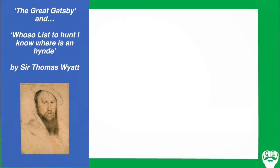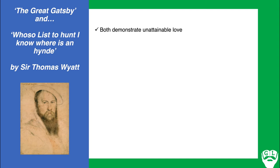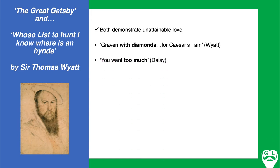Firstly, I'll compare The Great Gatsby to 'Whoso List to Hunt, I Know Where Is an Hind' by Sir Thomas Wyatt. Both texts demonstrate a sense of unattainable love — in Wyatt's poem we have this sense of never being able to achieve the love yearned for, much the same way as Gatsby's pursuit of Daisy. In Wyatt's poem, the object of affection is 'graven with diamonds for Caesar's I am' — diamonds as something exquisite and exorbitant to strive for, much as Gatsby values Daisy on a material level. Daisy also says in Chapter 7, 'if you want too much' — this thing that can never be had.